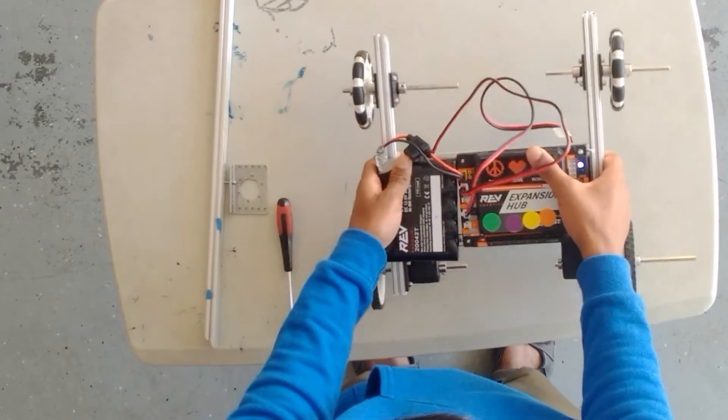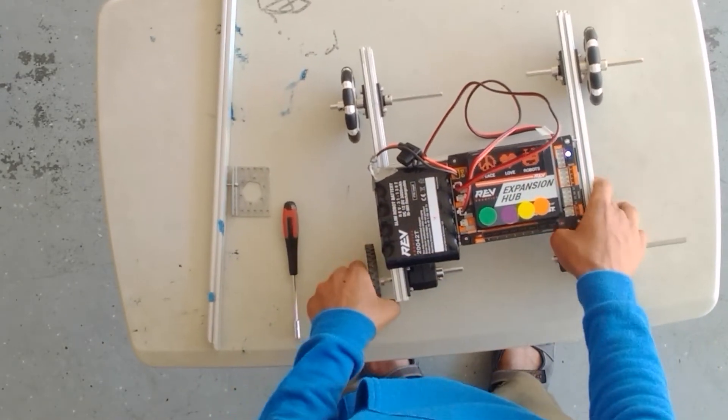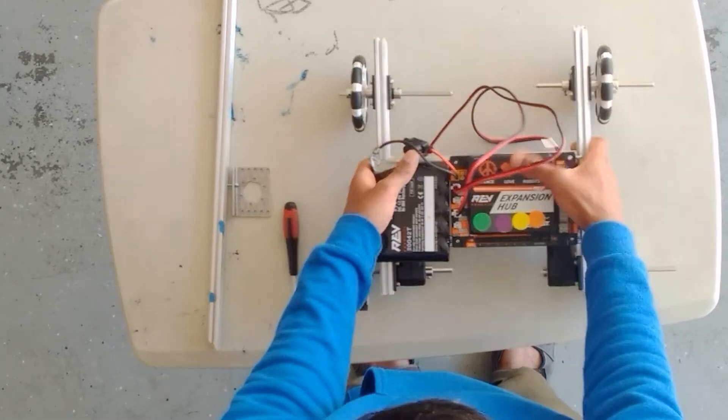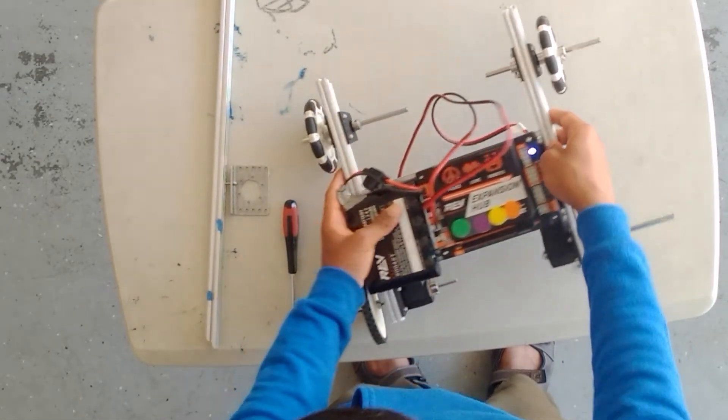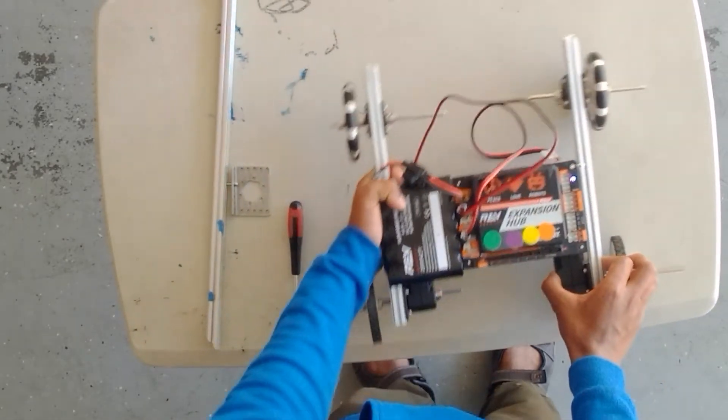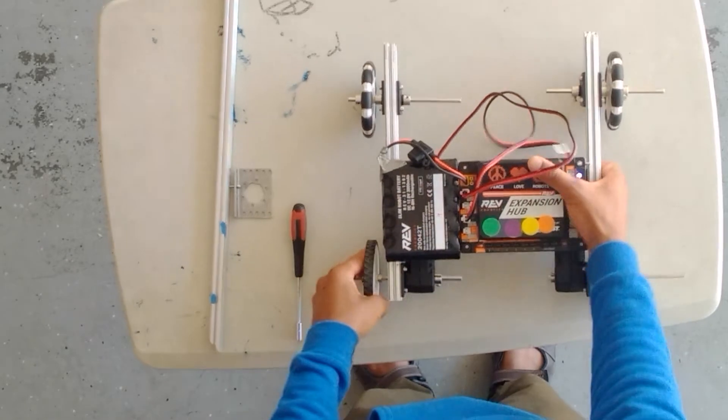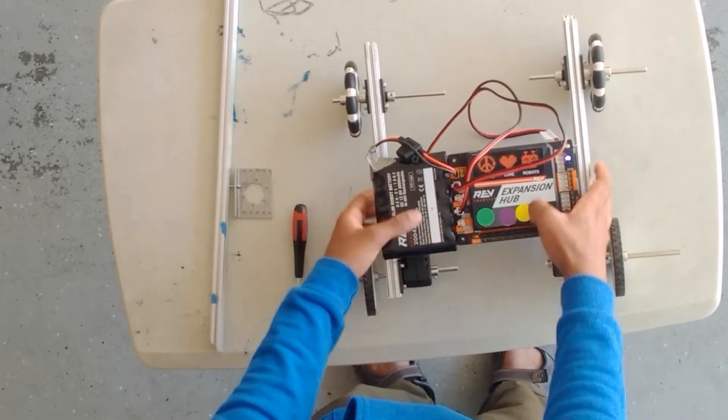Here we have an example of a robot built with REV. This is a basic pushbot. It has the expansion hub and battery as previously mentioned. But it's mainly made using these REV extrusions. Here we have REV motors mounted to them. And as you can see these REV parts are fairly floppy because many of these brackets are made out of plastic.